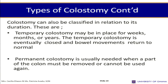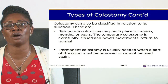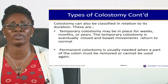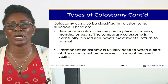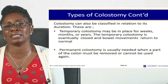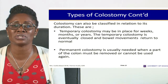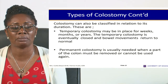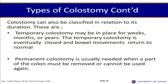Colostomy can also be classified by its duration. A temporary colostomy may be in place for weeks, months, or years, and is eventually closed so that bowel movement returns to normal. A permanent colostomy is usually needed when part of the colon must be removed or cannot be used again — typically with patients who have cancers or other non-temporary conditions — and the patient will have it for life.